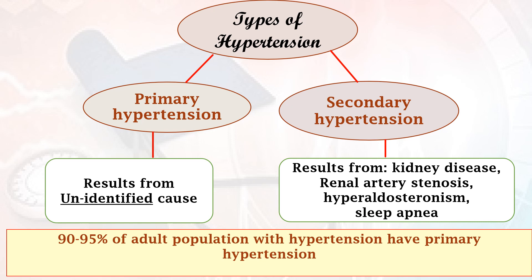Types of hypertension: hypertension is mainly categorized into primary hypertension and secondary hypertension. Primary hypertension results from an unidentified cause — there is no underlying reason. Secondary hypertension means the increase in blood pressure results from kidney diseases, renal artery stenosis, hyperaldosteronism, and sleep apnea — that is, any other pathological conditions that lead to hypertension.